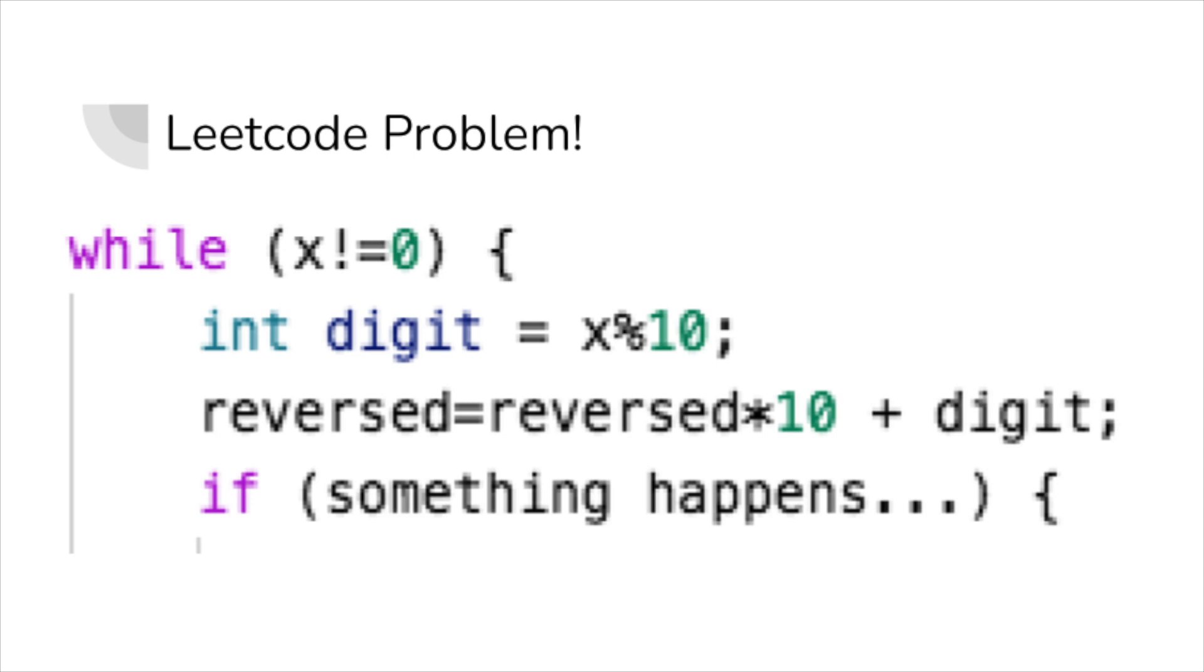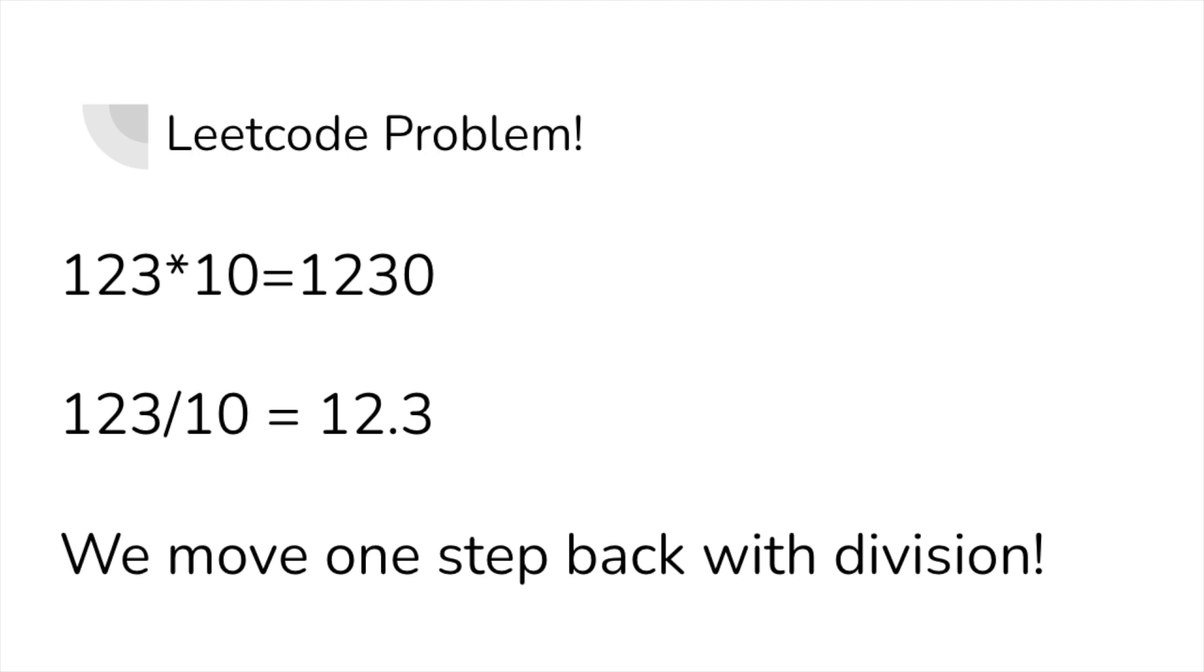We know that we simply cannot compare the reversed number to the integer limit, since an integer over the integer limit will change completely, so I have an idea. Why don't we check our number one step back?